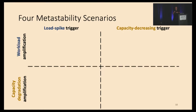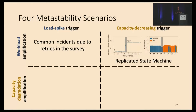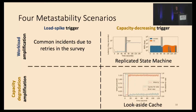In our paper we have examples for each category. On the upper left, load spike trigger with workload amplification — common incidents due to retries. On the upper right, we introduced metastable failures in a replicated state machine model using a popular NoSQL database, where slowdown serves as the capacity decreasing trigger and retries serve as the workload amplification mechanism. On the bottom right, we introduced metastable failures in a three-tier system with a web server frontend, a look-aside cache, and a backend database, where the cache hit ratio drop serves as the capacity decreasing trigger and the inability to repopulate the cache completes the capacity degradation amplification effect.